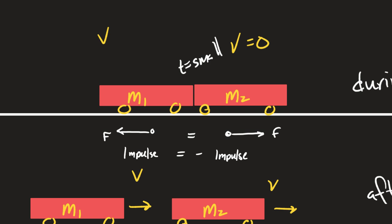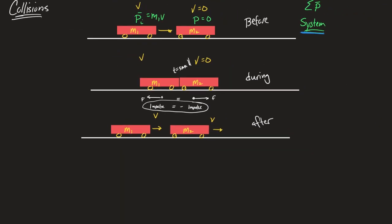Collision problems are relatively straightforward. In any collision question, you add up the momenta before the collision and set them equal to the momenta after the collision. The problem is that often we don't have enough information — the problem must supply sufficient data.